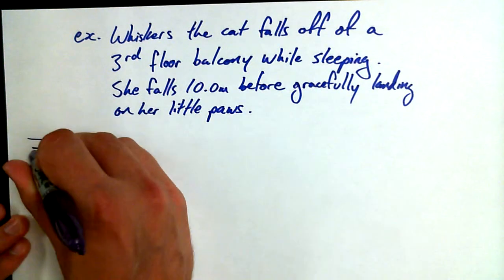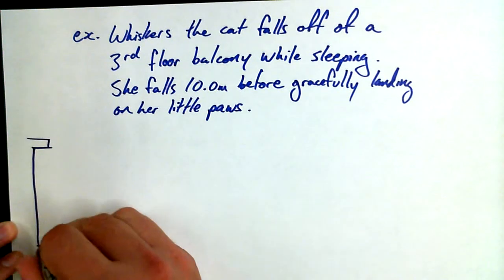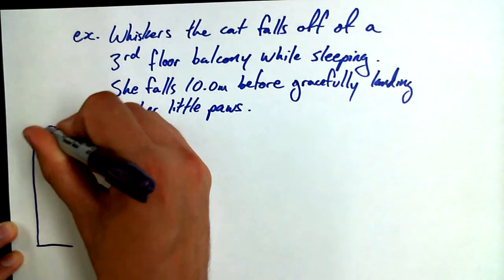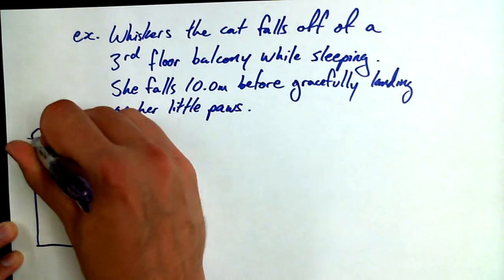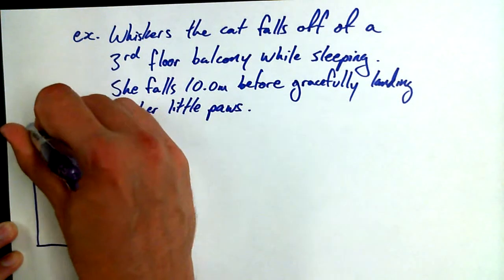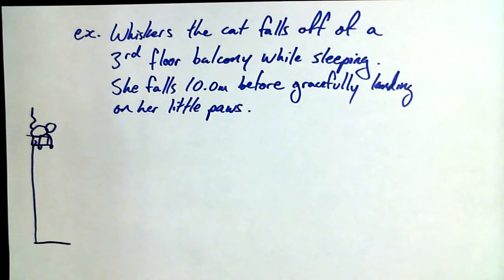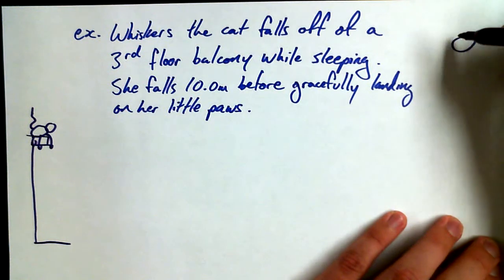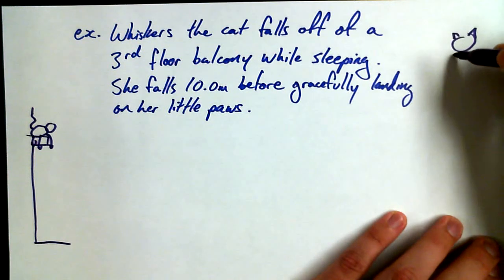We know little Whiskers is sitting on the balcony. Draw a cat as best you can. And if it looks as bad as that, that's okay. That's a cat. You want to make it a nicer cat, you can make it a nicer cat.